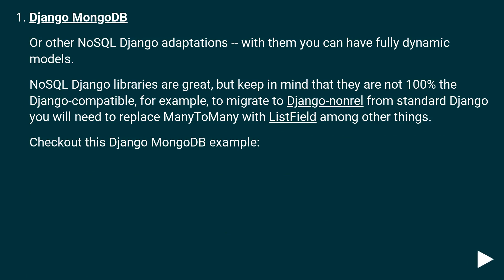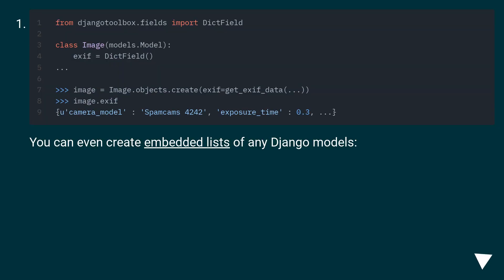Django MongoDB or other NoSQL Django adaptations: with them you can have fully dynamic models. NoSQL Django libraries are great but keep in mind that they are not 100% Django compatible — for example, to migrate to Django non-rel from standard Django you will need to replace many field types with ListField among other things. You can even create embedded lists of any Django models.